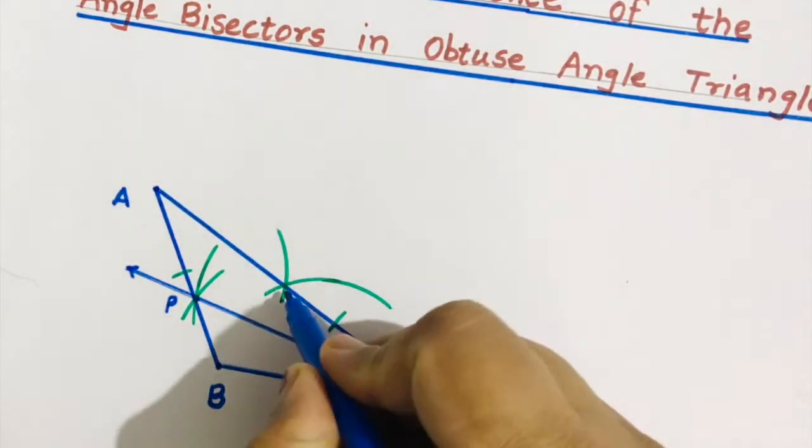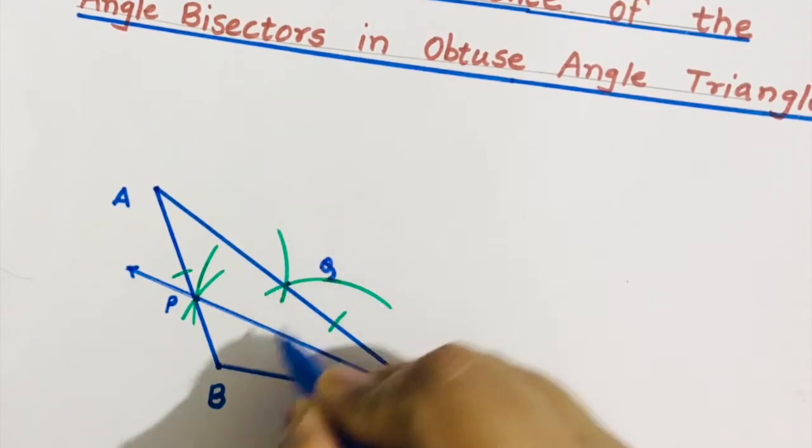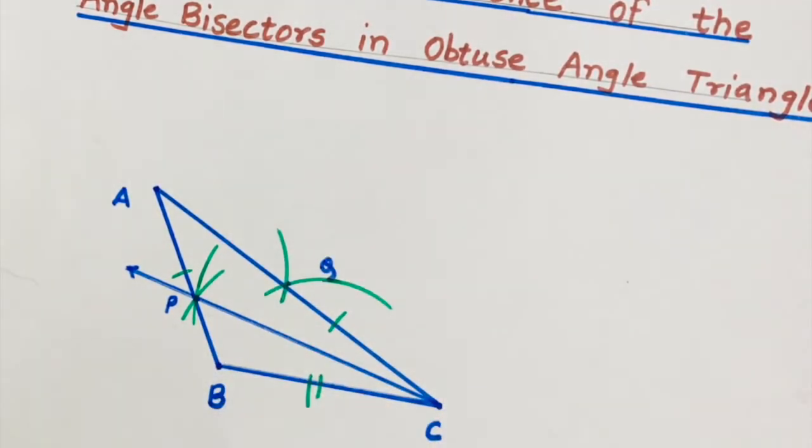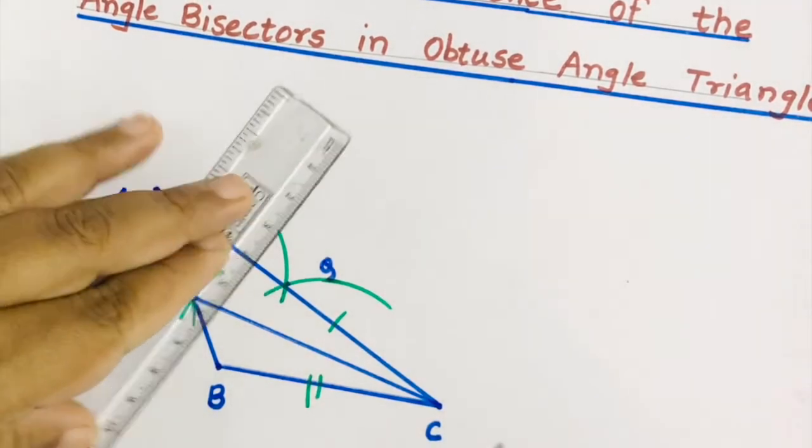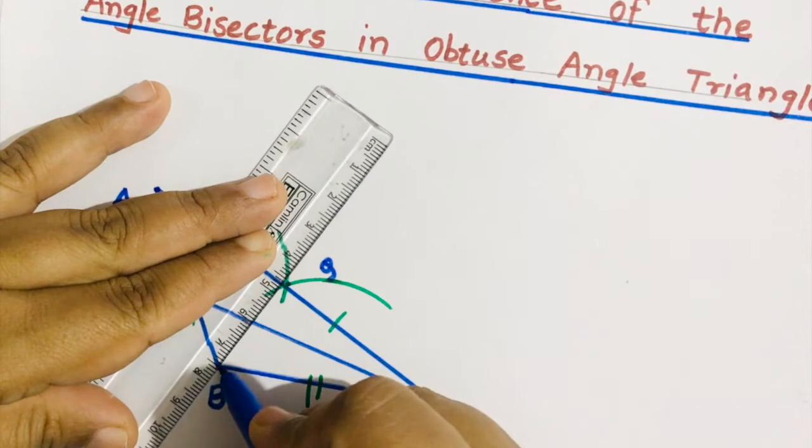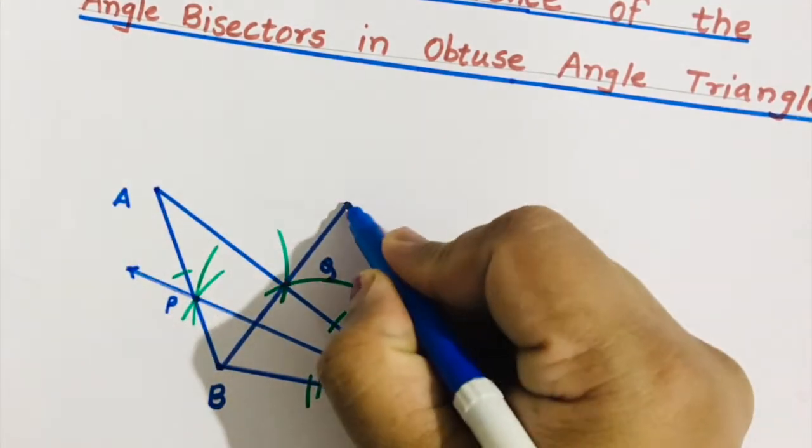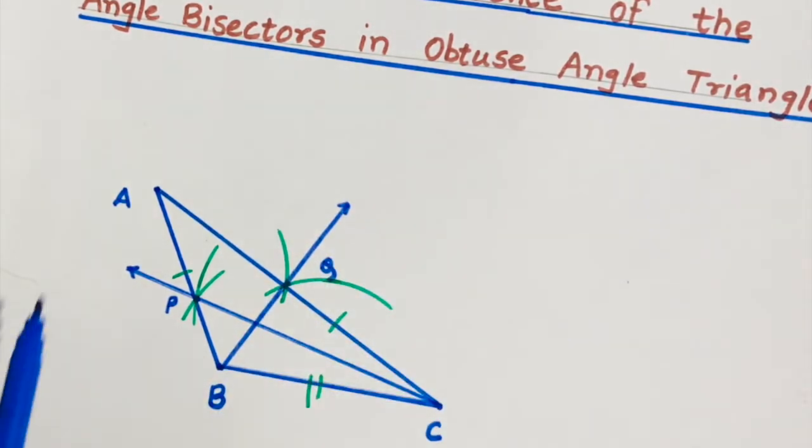Now this point you can name as Q. Join BQ, draw ray BQ. Ray BQ is the angle bisector of angle ABC.